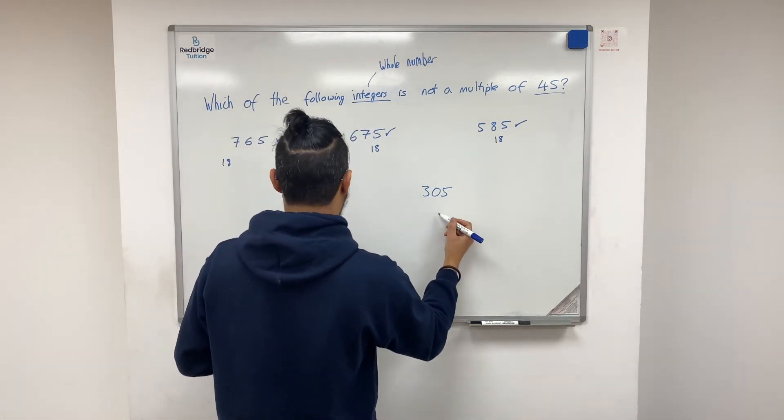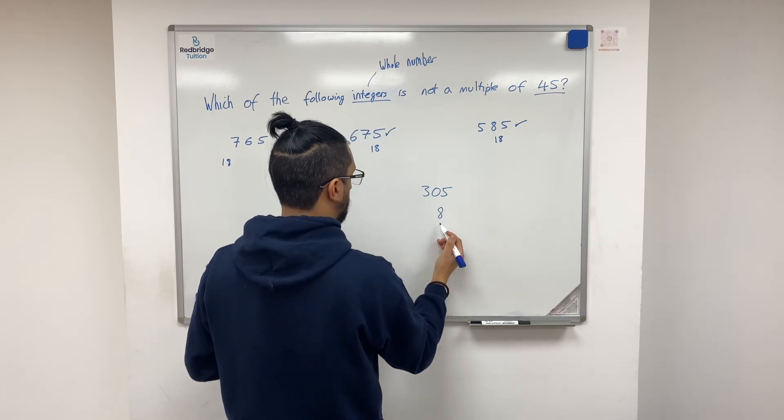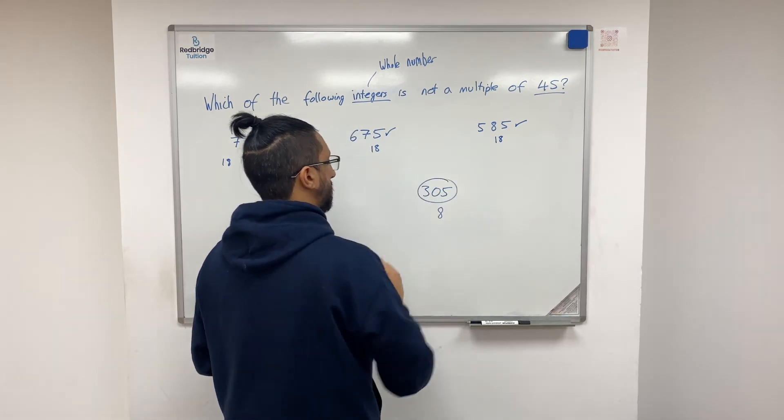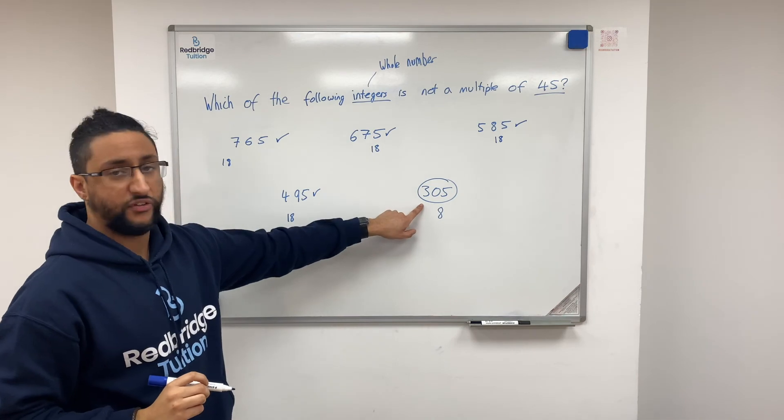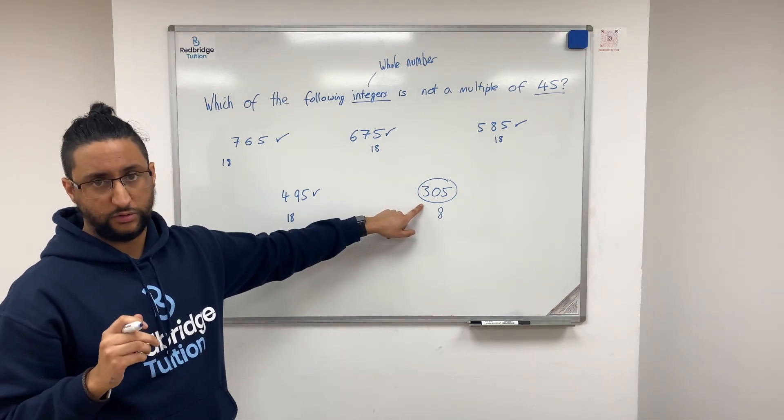3 and 0 plus 5 is 8. 8 is not divisible by 9. So 305 is your number that's not divisible by 45.